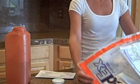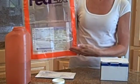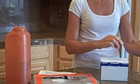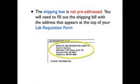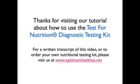You may ship the box either second-day FedEx with the shipping bill and pouch provided, or you can send second-day priority mail from the post office. The blue shipping box is not pre-addressed. As a result, you will need to fill out a FedEx shipping bill with the shipping address that appears at the top of your lab requisition form. If you choose second-day priority through your post office, complete a priority mail shipping label with your return address and the shipping address written out and apply to your kit before delivering to the post office.